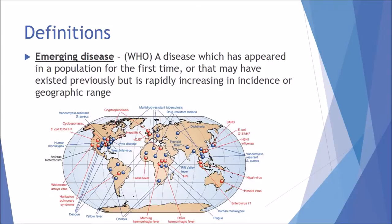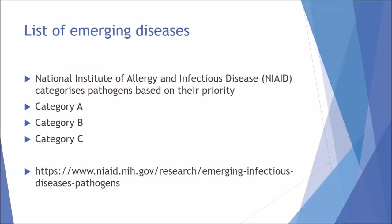A recent example is the Ebola outbreak in Sierra Leone, which will be discussed in a future video. An emerging disease is one where the first outbreak has just occurred, and a re-emerging disease is one which has appeared again — as is the case with Ebola over several years.